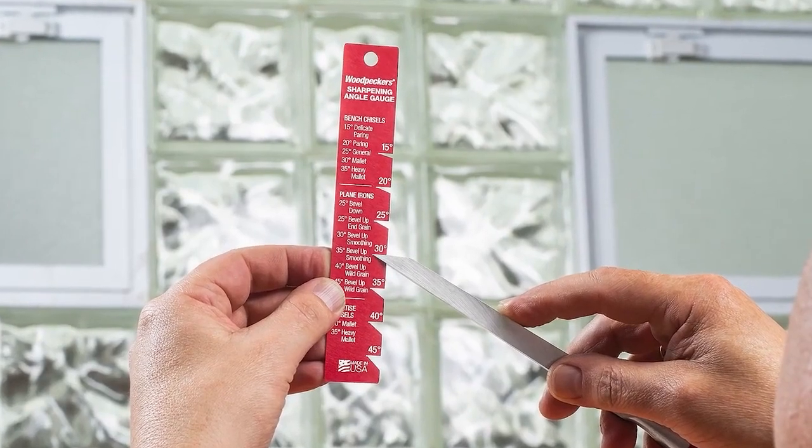Next, we move on to the sharpening angle gauge, which is laser cut out of sheets of aluminum.